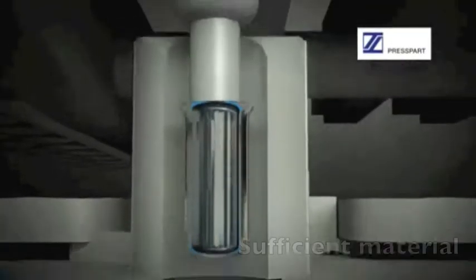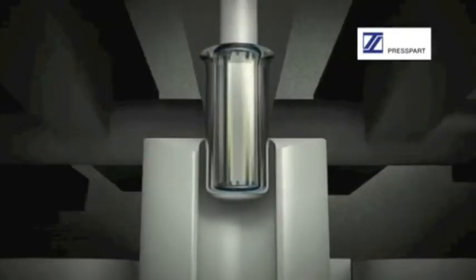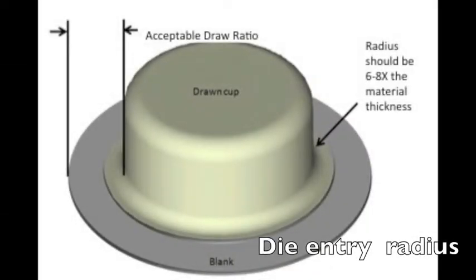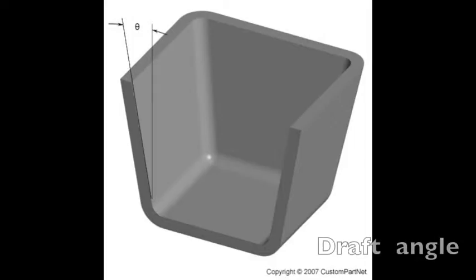Redrawing requires that all the material be present during the first draw and to maintain a constant blank diameter for the subsequent drawing steps. To prevent wrinkles in the material, the die entry radius should be approximately 6 to 8 times the material's thickness. Extreme draft angles should be avoided when possible, and if necessary, the punch radius should be as large as possible.